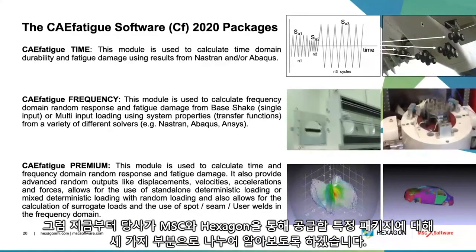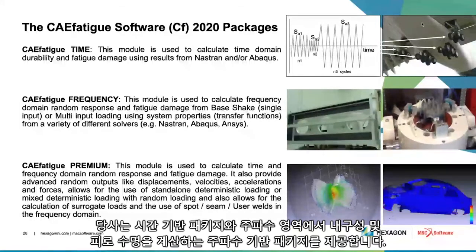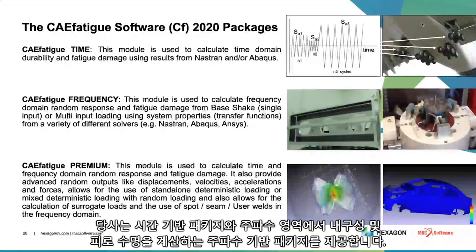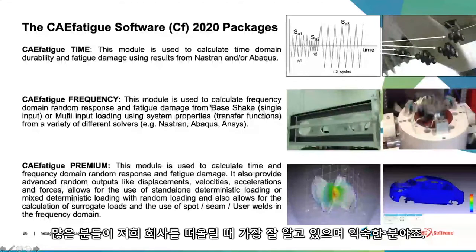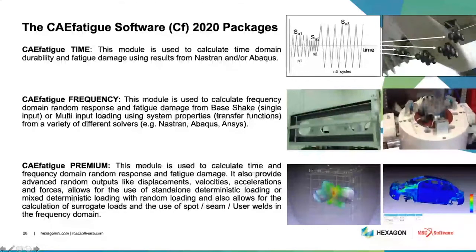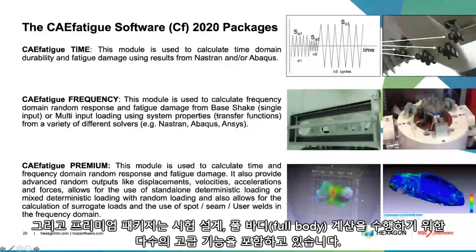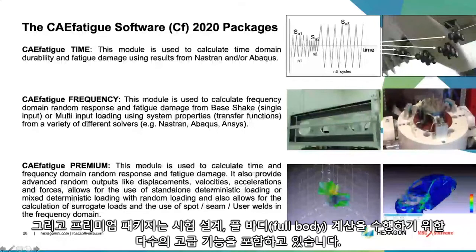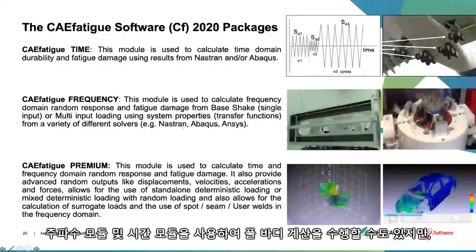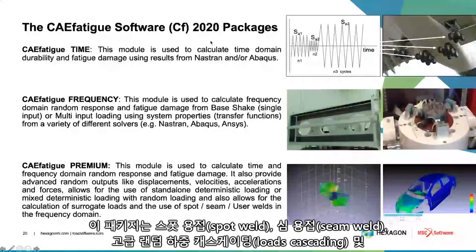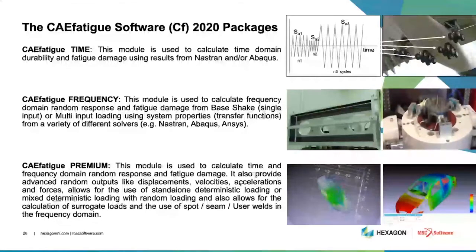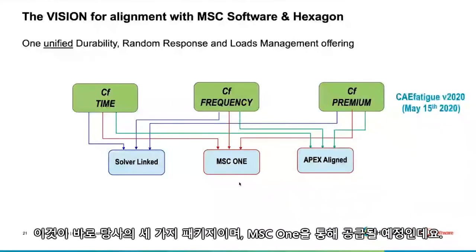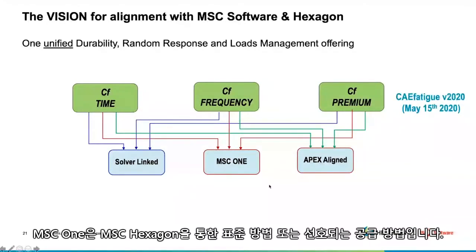We're going to supply a time-based package doing time-based durability and fatigue calculations, a frequency package which will do our standard frequency domain calculations — what most people know us for — and then the premium package, which has advanced features for test design, full body calculations, spot weld and seam weld, advanced random loads cascading, and more. These three packages will be supplied through MSC One, the preferred method of delivery through MSC Hexagon. If you can't use the software through MSC One, there is also a standalone version, which we call APEX Align.